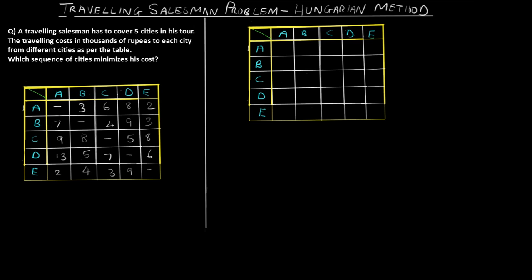For step one, we first assign infinity wherever a city travels to itself — that is, wherever there is A-A, B-B, C-C, and so on — because the salesman won't be traveling from the same city to the same city. So let's assign infinity values to those diagonal cells.